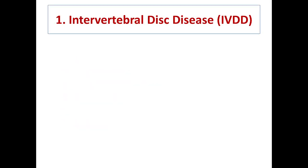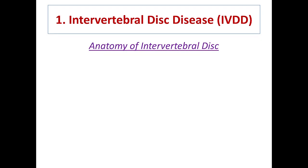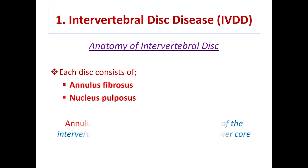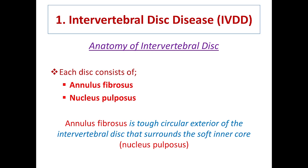To understand IVDD — intervertebral disc displacement — anatomy of the intervertebral disc is very essential. The vertebral disc consists of two parts: annulus fibrosis and nucleus pulposus.